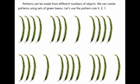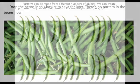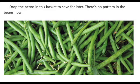Patterns can be made from different numbers of objects. We can create patterns using sets of green beans. Let's use the pattern rule 4, 3, 1. Drop the beans in this basket to save for later. There's no pattern in the beans now.